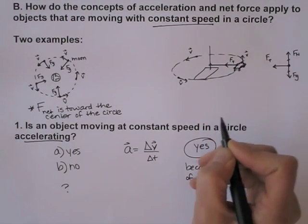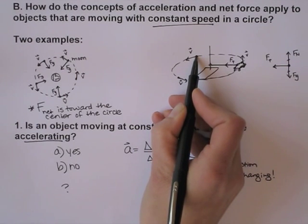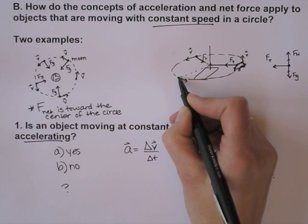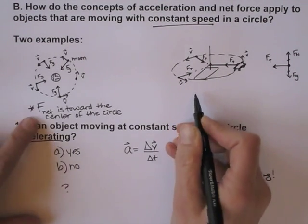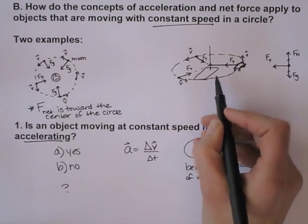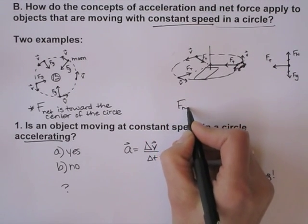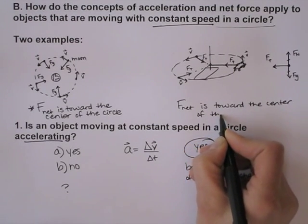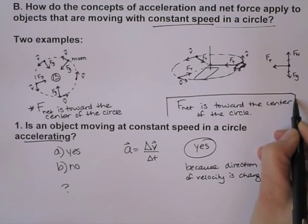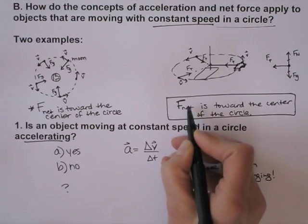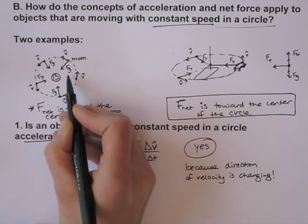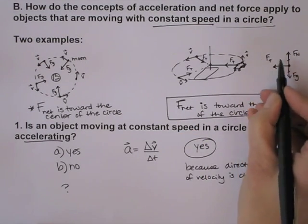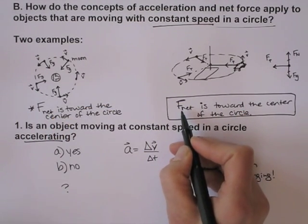When the car is at one position, the tension pulls it toward the center. When the car is at another position, the string is at a different angle and the tension is along the string, still pointing toward the center. So F-net is toward the center of the circle — this is what happens for objects moving in a circle. Depending on your situation, your net force will be made up of different actual forces: here the net force is Fg, here it's Ft. It depends on what's happening in your actual situation.